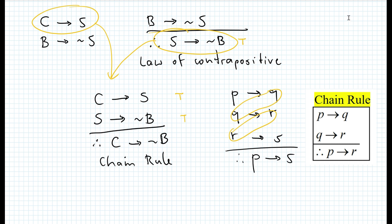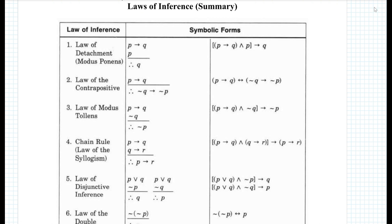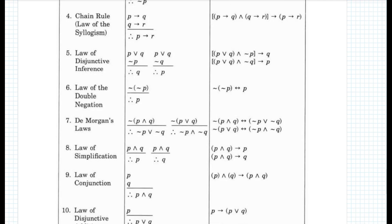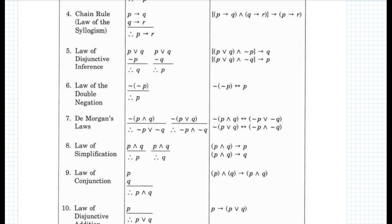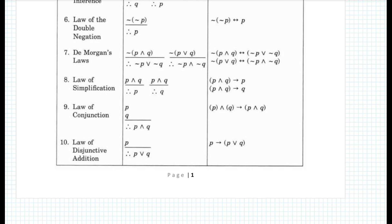Let's summarize today's lesson. We learned four new laws: the law of simplification, the law of disjunctive addition, the law of conjunction, and the chain rule. We're now finished introducing all the laws of logic — there are 10 laws total, called laws of inference. They are: law of detachment (modus ponens), law of contrapositive, law of modus tollens, chain rule, law of disjunctive inference, law of double negation, DeMorgan's law, law of simplification, law of conjunction, and law of disjunctive addition.